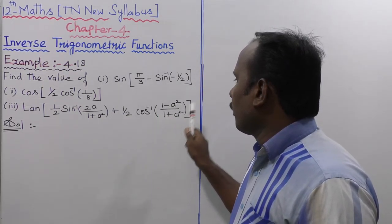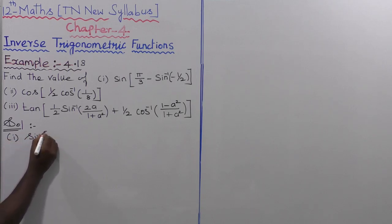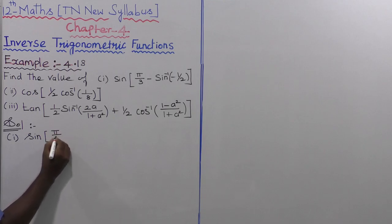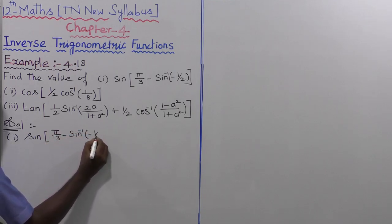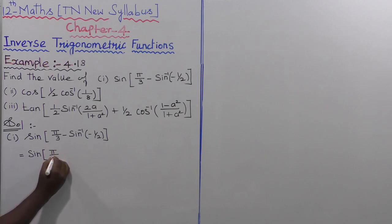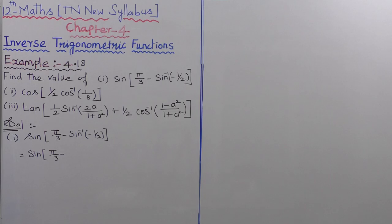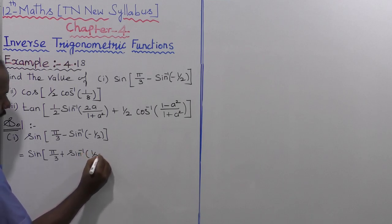For the first subdivision, we take sin(π/3 - sin⁻¹(-1/2)). This equals sin(π/3 + sin⁻¹(1/2)), because using the formula sin⁻¹(-θ) = -sin⁻¹(θ), the negative sign moves out and becomes positive.